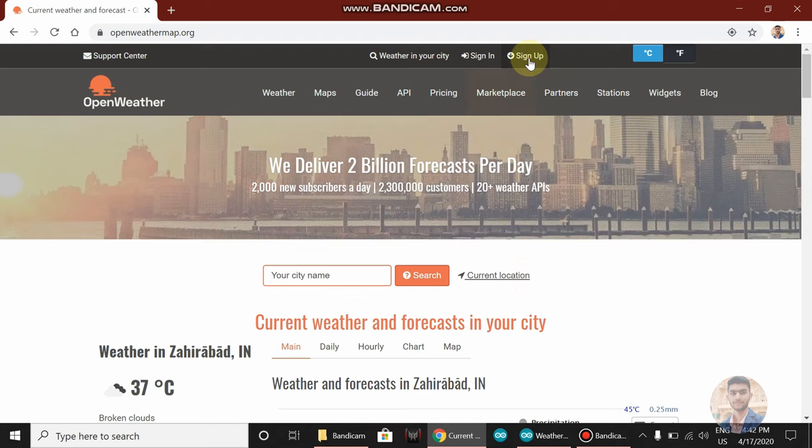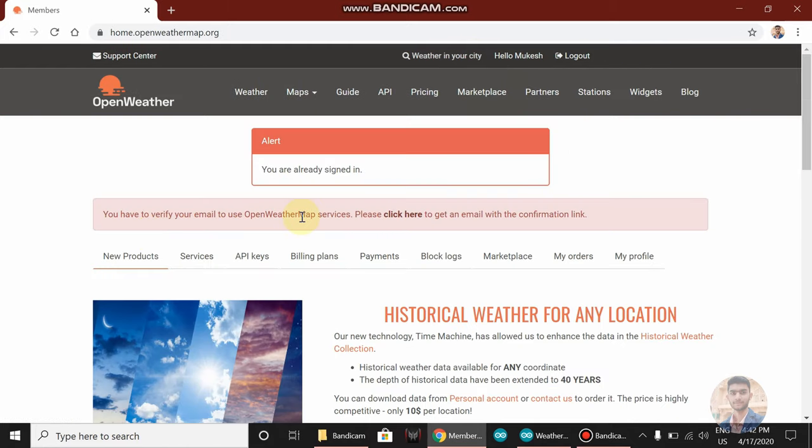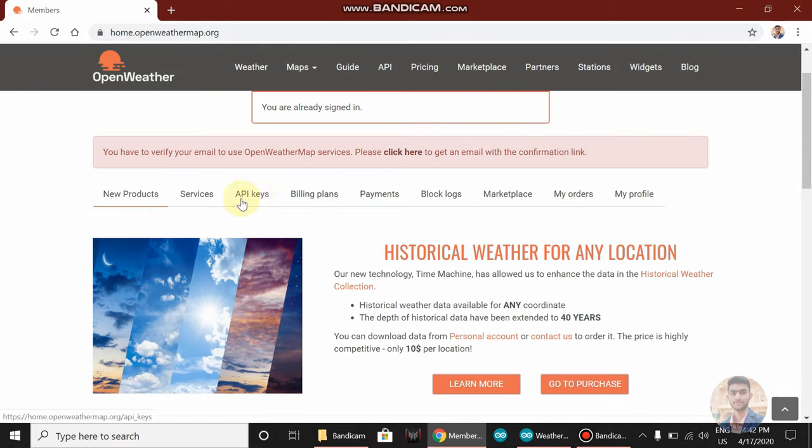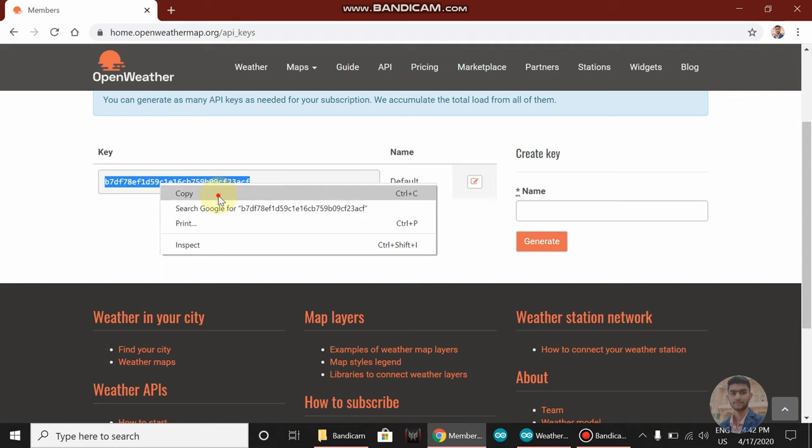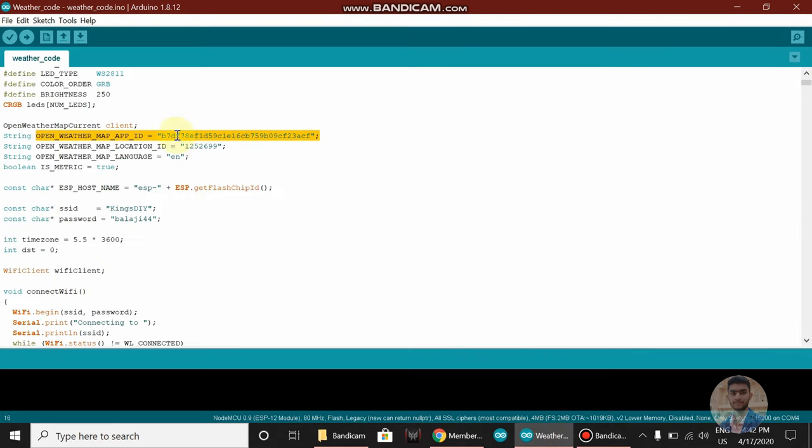Make sure you have created an account on this website and log in. After you log in, click on API keys. This is the API key that I have to copy and paste in the program.